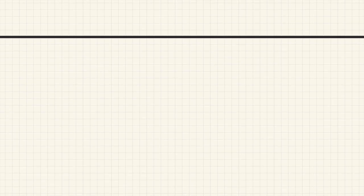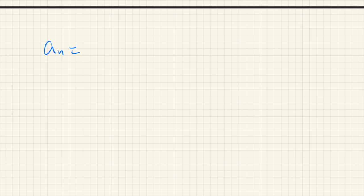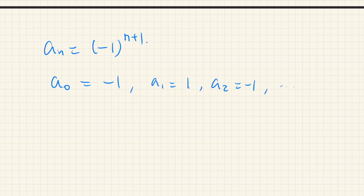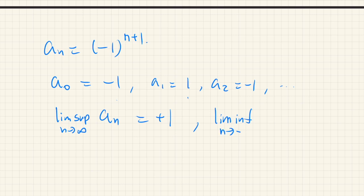Let's see a few examples. Consider the sequence a_n = (-1)^n + 1. So a_0 = -1, a_1 = 1, a_2 = -1, and so on — this sequence oscillates between -1 and +1 and does not converge. However, we still have limit superior equal to +1 and limit inferior equal to -1.